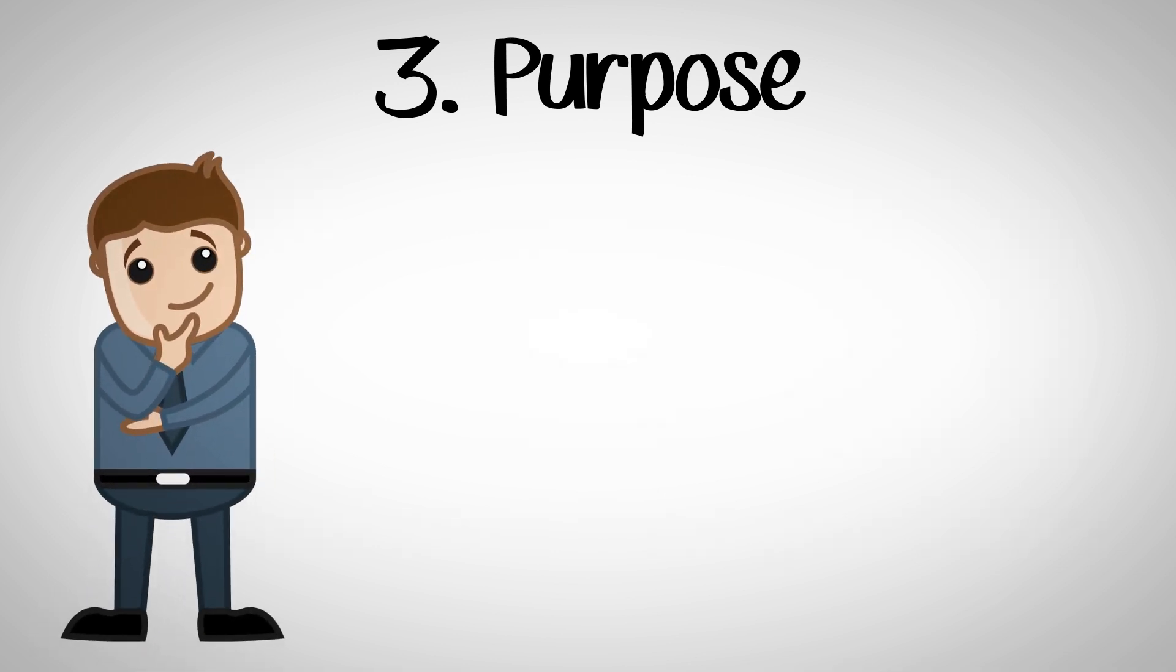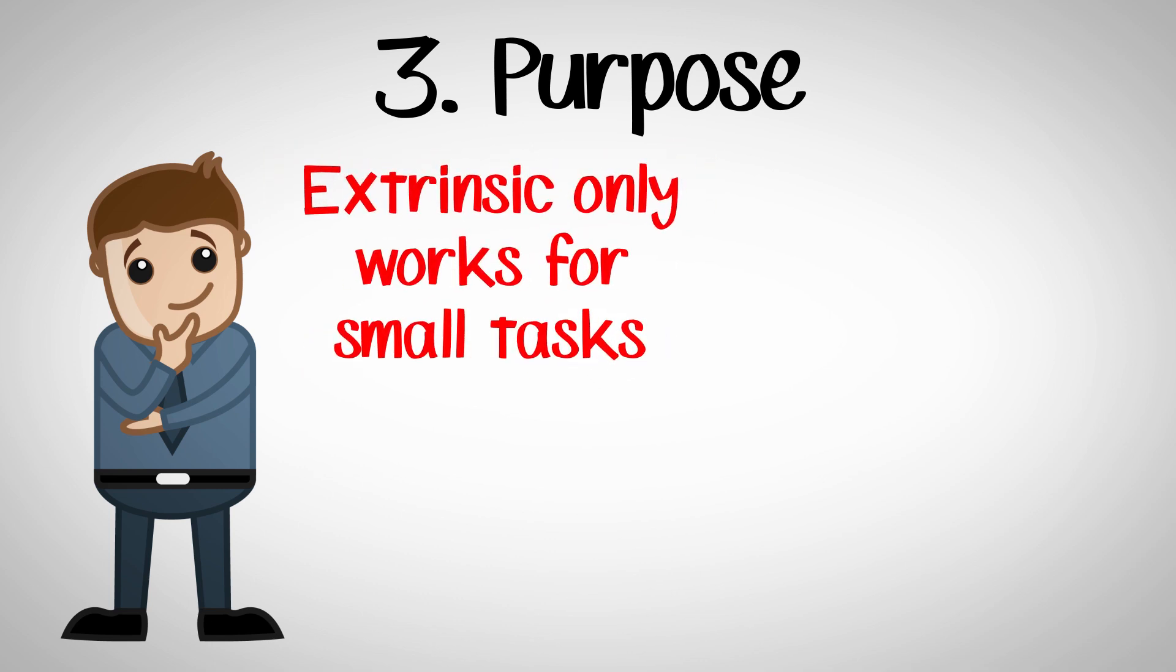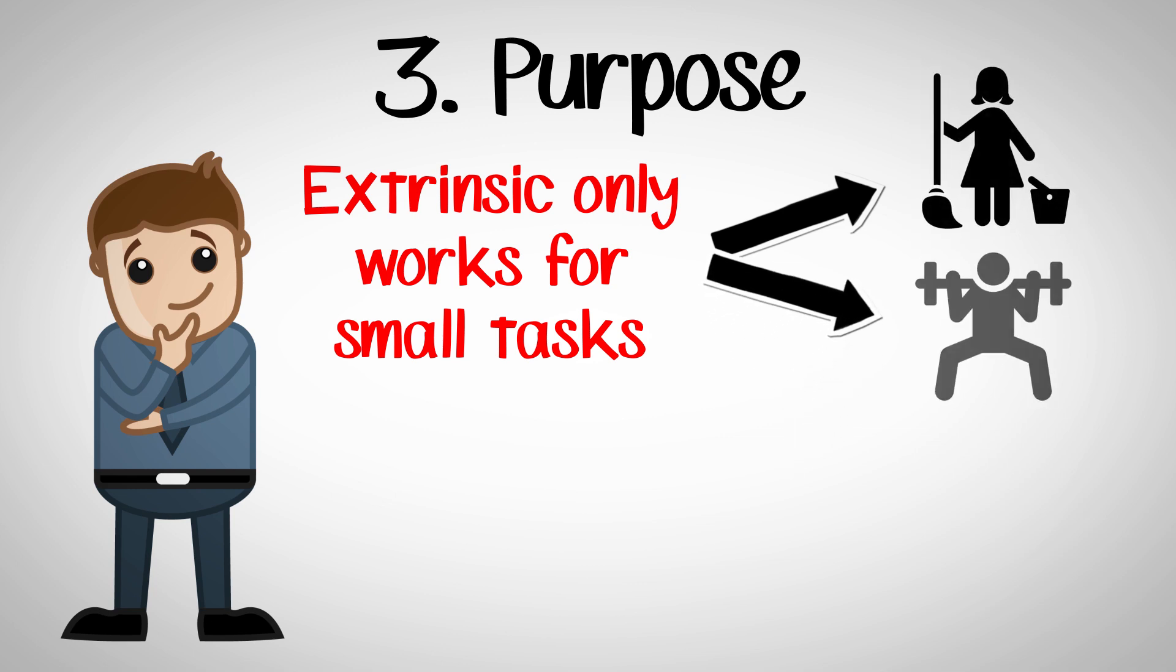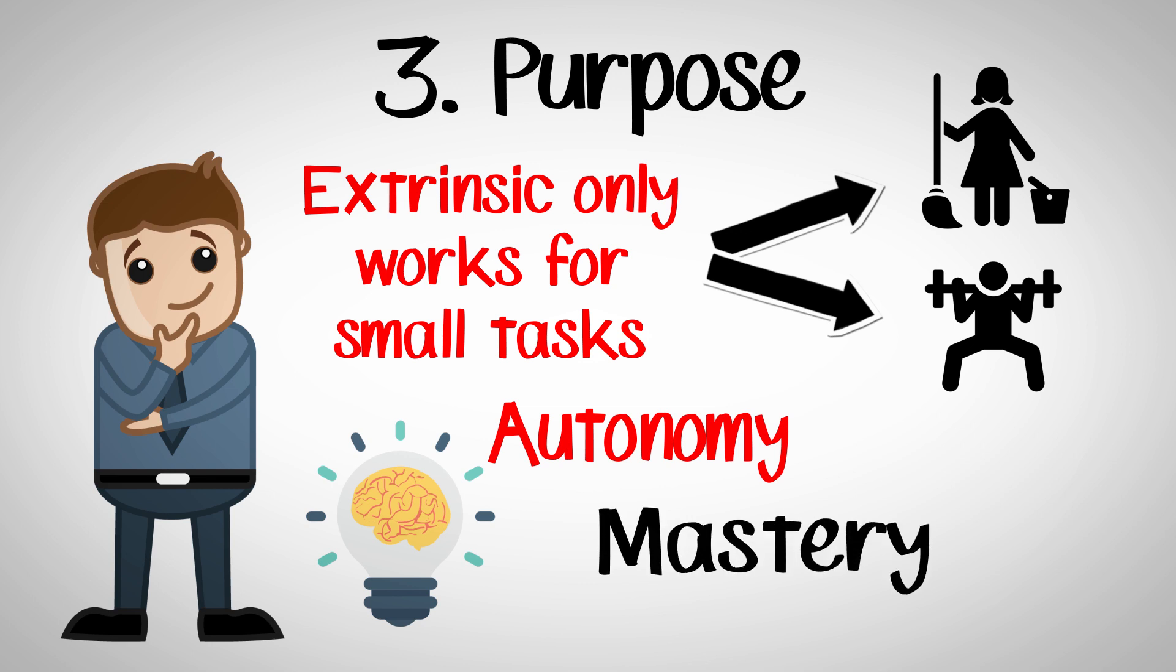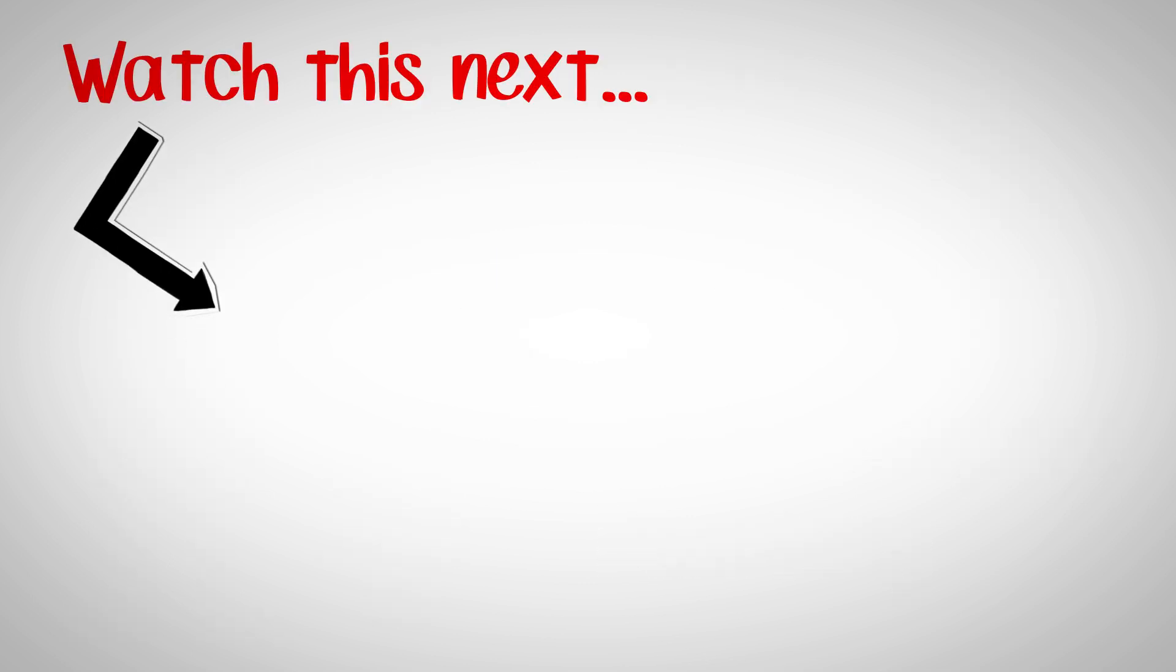So remember, extrinsic motivation like reward and punishment does work for simple tasks. So you can use that kind of a thing to get yourself to go to the gym or clean your house. However, when the task involves using your brain even a little bit, then you need the three intrinsic pillars of motivation, which are autonomy, mastery, or having a big purpose. You should watch this video to learn how you can take small steps that lead to massive results. That's all for now and thanks for watching.